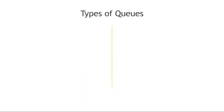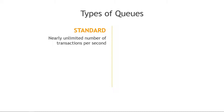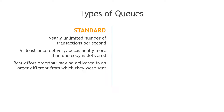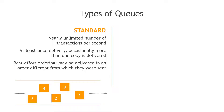Let's talk about the types of queues in SQS. There's a standard queue and a FIFO (first in, first out) queue. The standard queue allows nearly unlimited transactions per second with at least once delivery, meaning occasionally a duplicate copy of a message might be delivered. It works with best effort ordering — messages are generally delivered in the order sent, but sometimes they arrive in a different order.